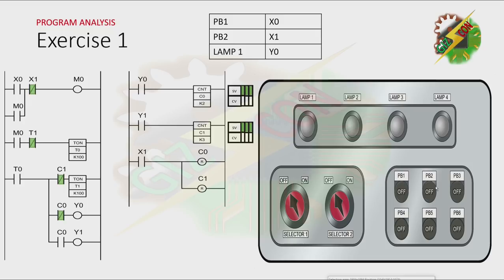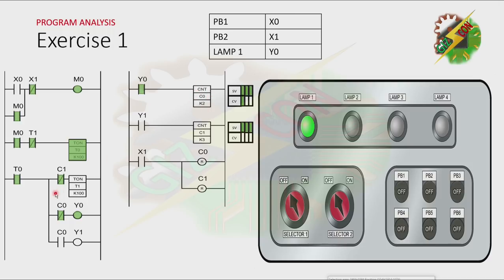This will be my answer to this exercise. Let's press PB1. As you can see here, there's a latching. And because M0 is activated, T0 will be activated after 1 second. Then Y0 will be activated. Because Y0 is activated, the count value of C0 increases. And after that, T1 will be activated after 1 second. And because T1 is activated, the normally closed contact of T1 will be open, and that will cause T0 to deactivate.